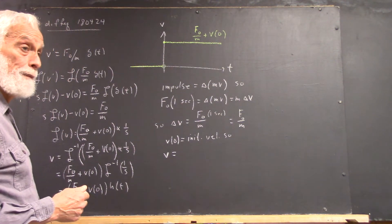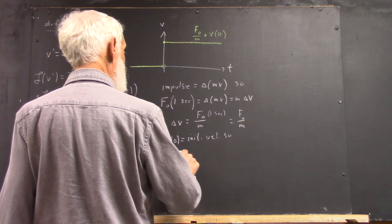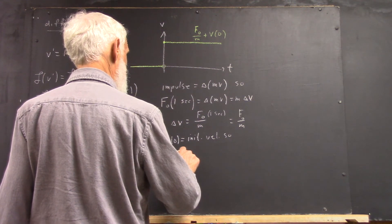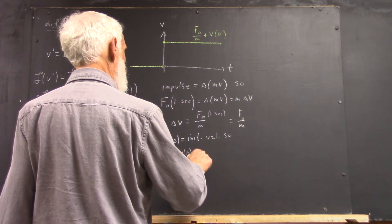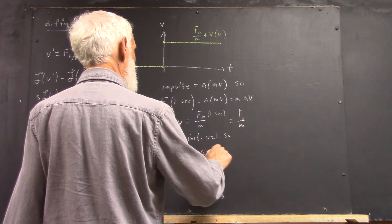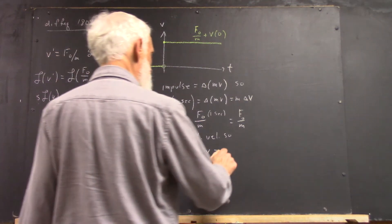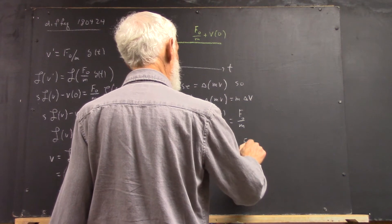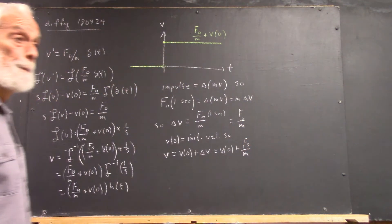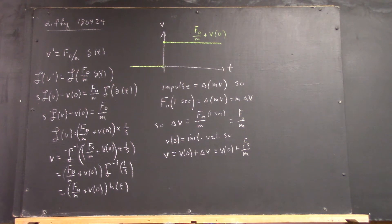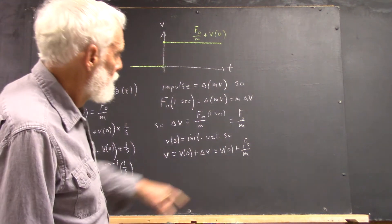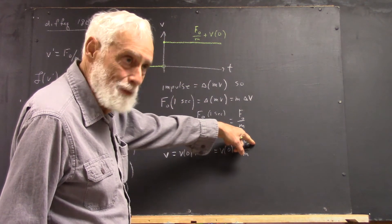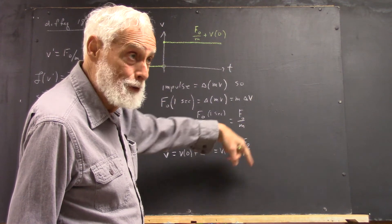So the v equals v of 0 plus delta v, which is v of 0 plus f naught over m. Impulse over change in momentum. Again, you've got to be careful that this is really f naught times 1 time unit, right? From here to there.